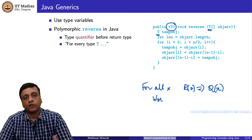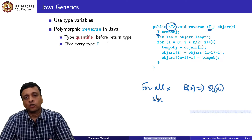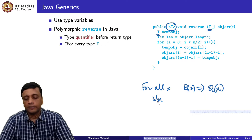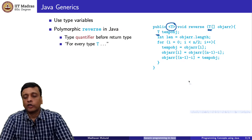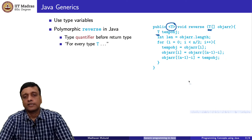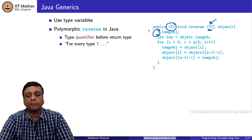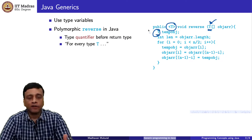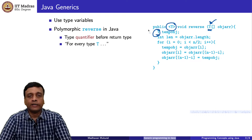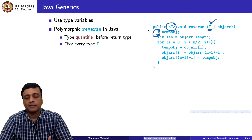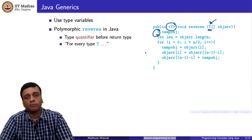The type T used inside is inferred: whatever type of array you pass to reverse automatically fixes the type of the temporary object used inside. So it is defined for every type T, but you do not have to explicitly call it saying 'I am calling reverse with an array of Date' or 'an array of Ticket'. The moment you pass an array, T is matched to the type of that array, and internally it runs with a temporary variable of that same type.